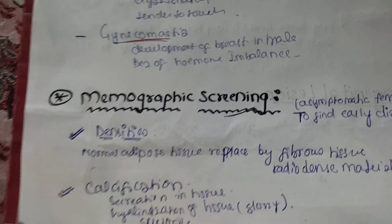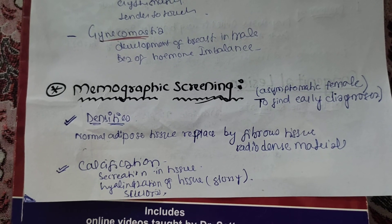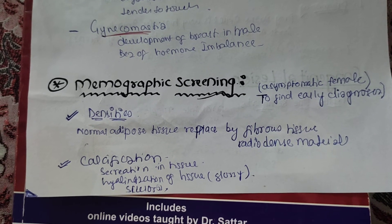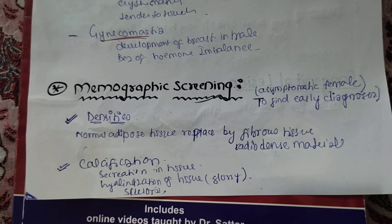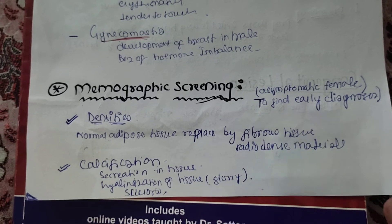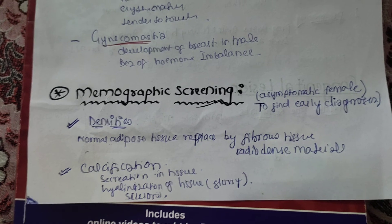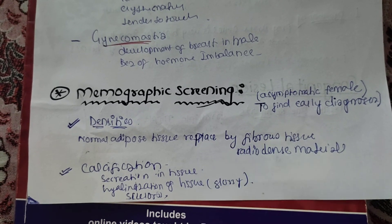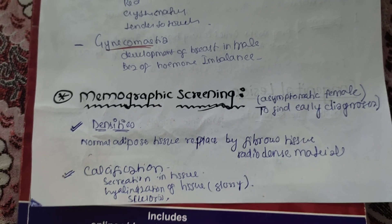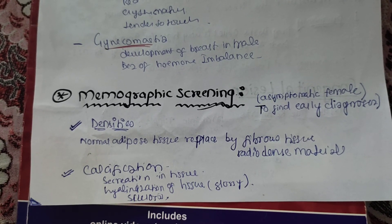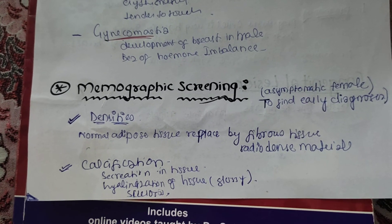Now we move to mammographic screening — this means screening of the breast. Screening is done when a person is asymptomatic and you want to diagnose the disease early. In mammographic screening of the breast, there are two main findings: density and calcification.